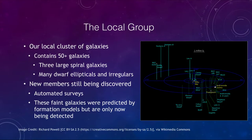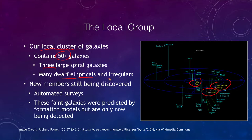Starting close to us, we have what we call our local group — our local cluster of galaxies. It contains a little over 50 galaxies, including three large spiral galaxies: the Milky Way, the Andromeda galaxy, and the Triangulum galaxy. There are also many dwarf elliptical and irregular galaxies scattered around as well.